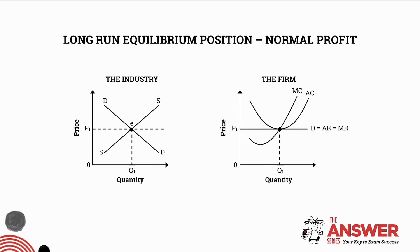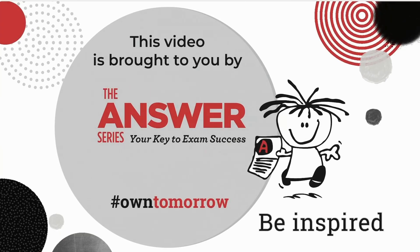The long-run equilibrium position for the firm is always to make a normal profit. Wherever you see a long-run equilibrium graph, it must now become synonymous with normal profit. You should now be able to draw and explain the long-run equilibrium position, and you should also know how the entrance and exit of firms impact on the long-run equilibrium position.